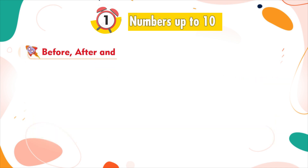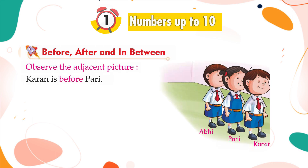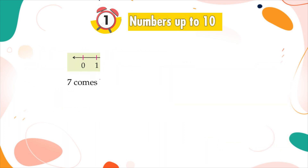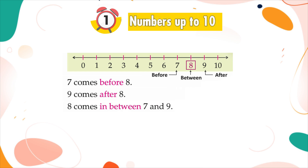Before, after, and in between. Observe the adjacent picture. Karan is before Pari. Abhi is after Pari. Pari is in between Karan and Abhi. Similarly, on the number line, seven comes before eight, nine comes after eight, and eight comes in between seven and nine.